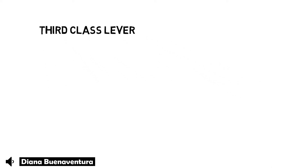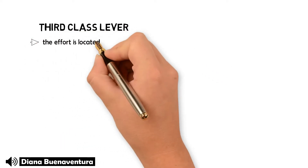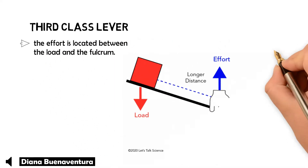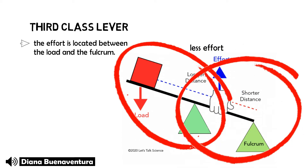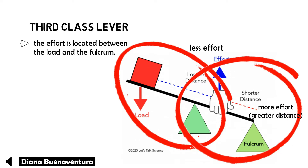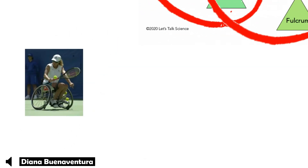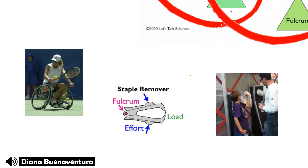Lastly, the third class lever. In a third class lever, the effort is located between the load and the fulcrum. If the fulcrum is closer to the load, then less effort is needed to move the load. If the fulcrum is closer to the effort, then the load will move to a greater distance. Examples of third class levers are swinging a tennis racket, staple removers, and lifting objects using your bicep muscles.